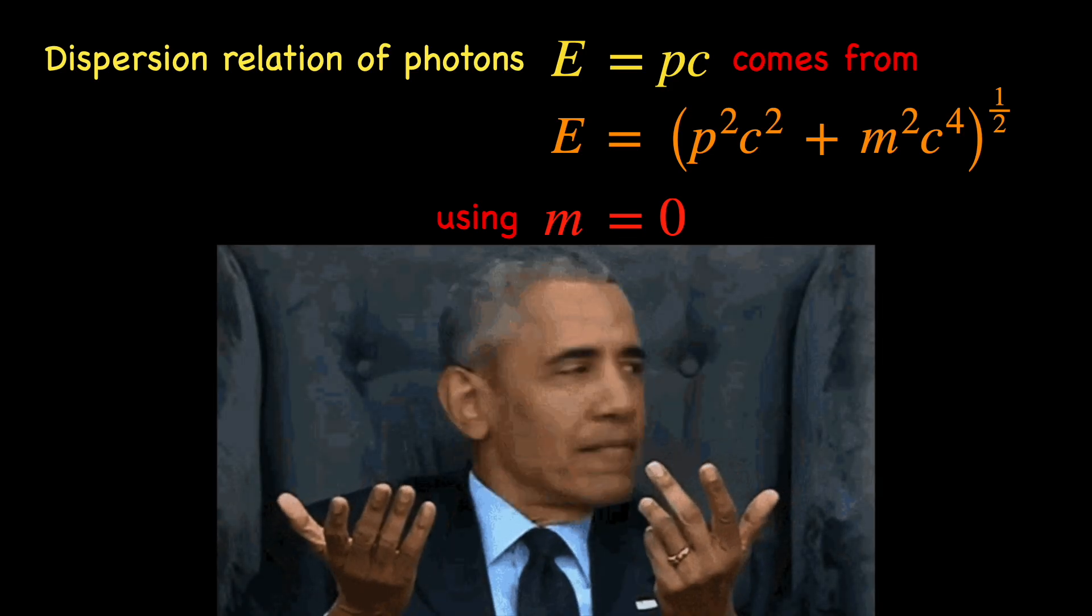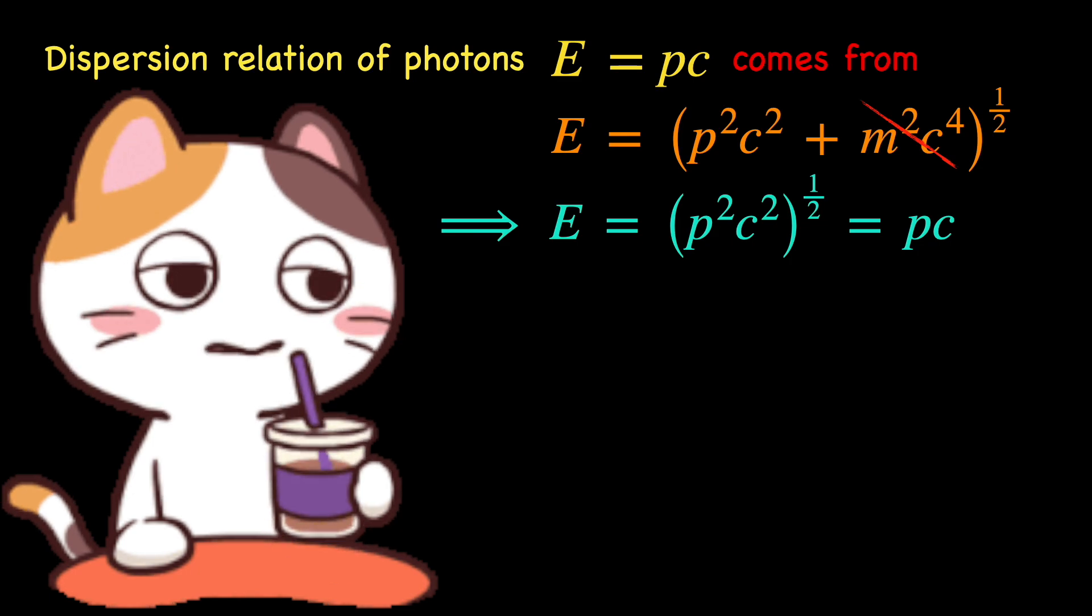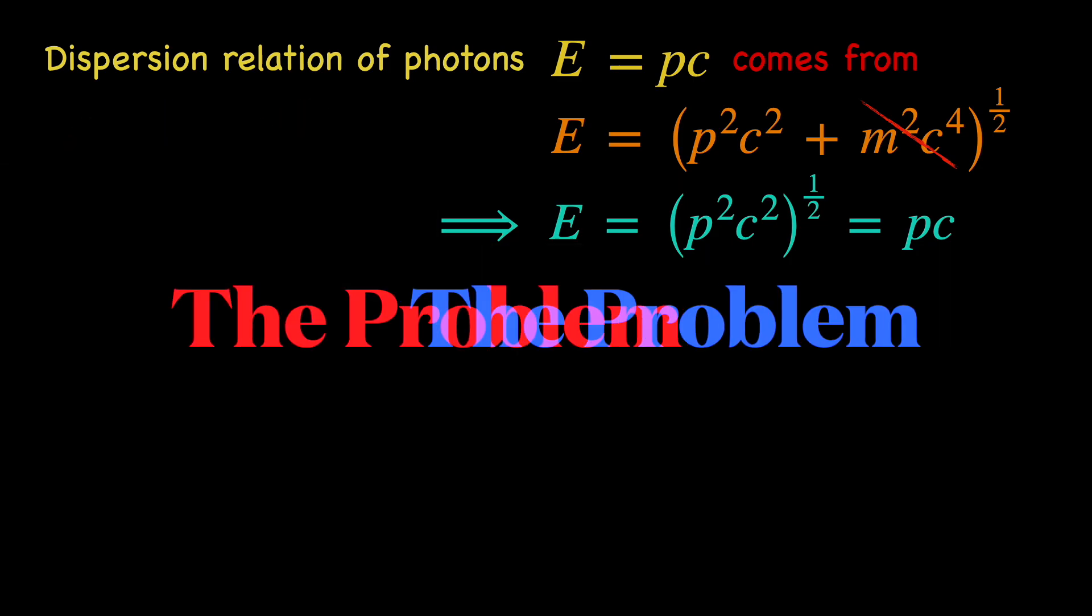But why is this a problem? Putting m equals 0 in the relativistic dispersion relation of a massive particle to get the E equals pc relation for a photon looks simple enough. Why am I making a fuss about it? Because of the following reasons.